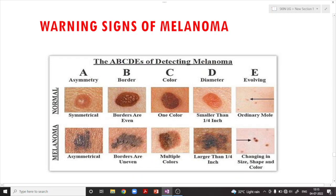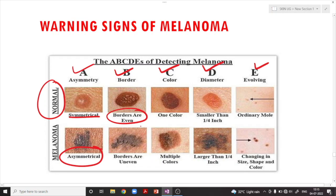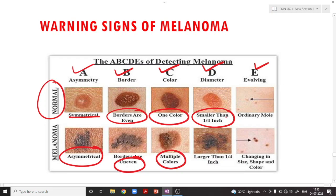The warning signs of melanoma are A, B, C, D, E. A stands for Asymmetry — normal lesions are symmetric, whereas melanoma becomes asymmetric. B stands for Border — normally even, but in melanoma the borders become uneven. C stands for Color — one color in benign lesions, but multiple colors in melanoma. D stands for Diameter — smaller than one-fourth of an inch in normal moles, larger than one-fourth of an inch in melanoma. E stands for Evolution — the lesion starts to change in size, shape, and color.